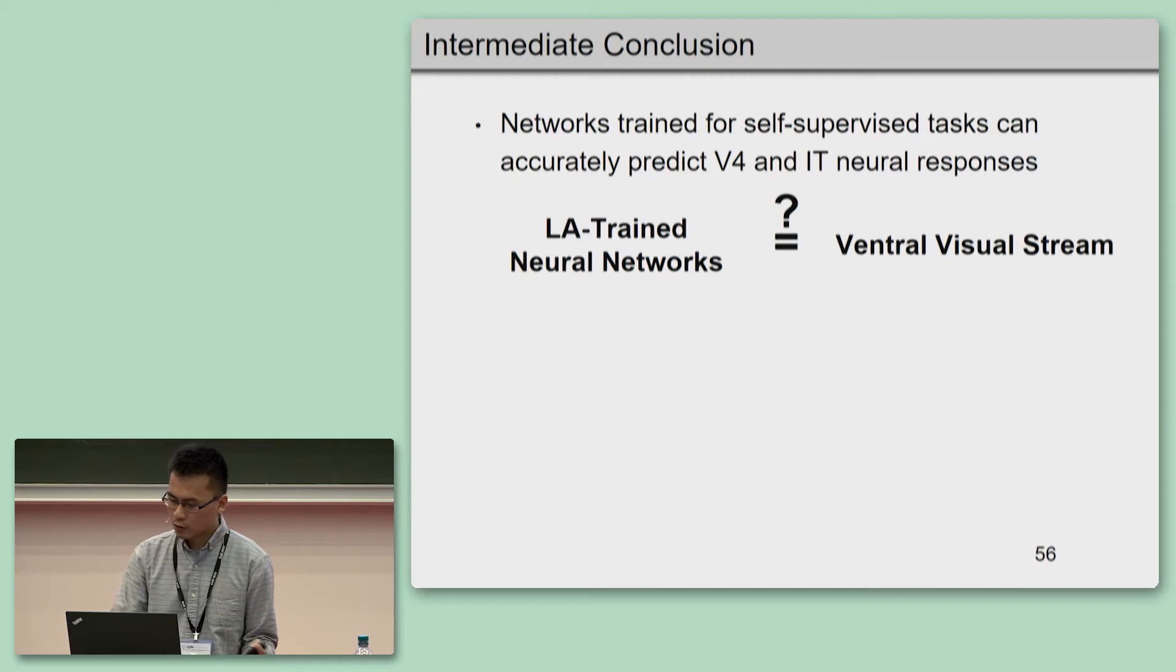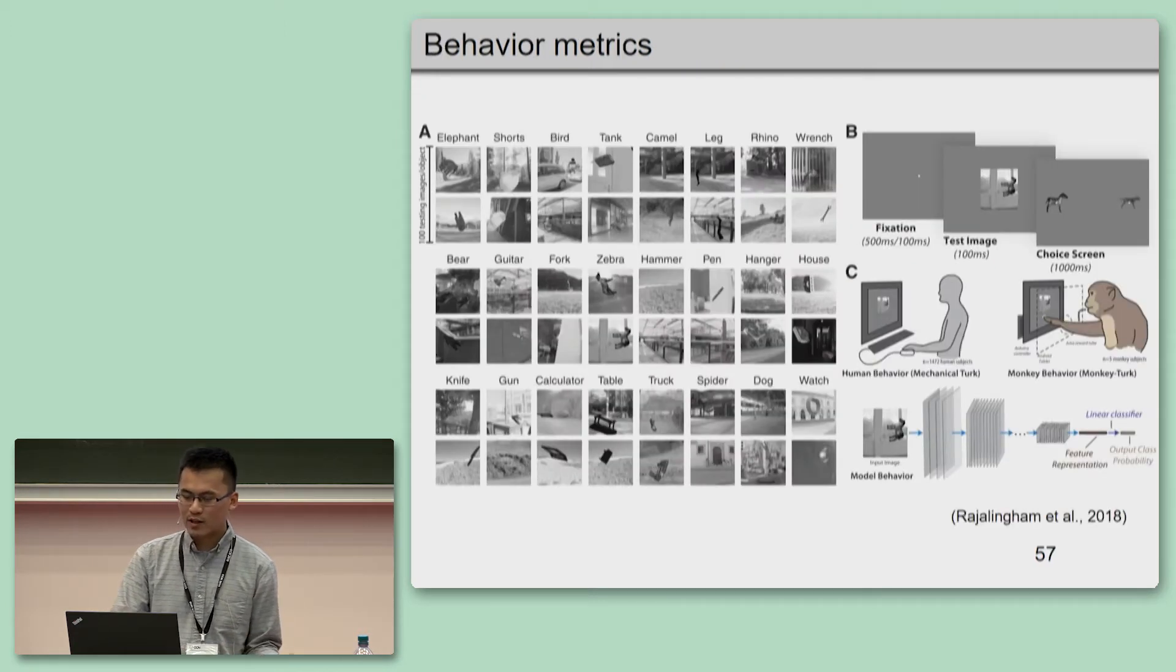So it seems that we have got what we want, and the network trained using self-supervised task can accurately predict V4 and IT neural responses. Let's ask ourselves this question again. Is LA in the network now actually equal to ventral visual stream? Okay, I guess you know the answer is of course another no.